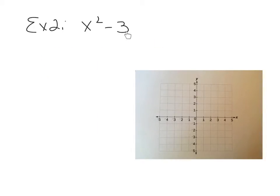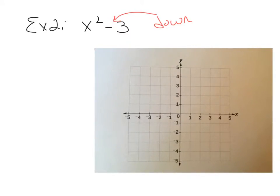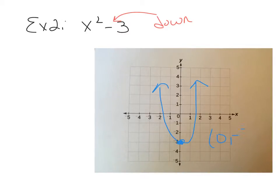Example 2 says graph x squared minus 3. We see a minus 3 here, so this is going to be a shift down 3 units. Our vertex is now going to shift from the origin down to negative 3. The parabola opens up. The vertex is at 0, negative 3 — it's still a minimum. The axis of symmetry is still on the y-axis, so the equation is x equals 0.